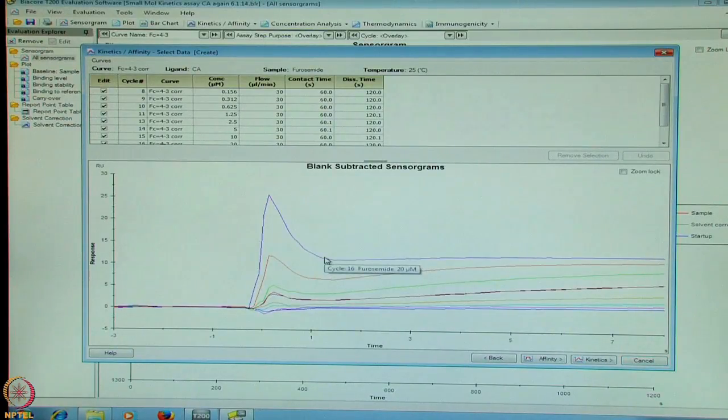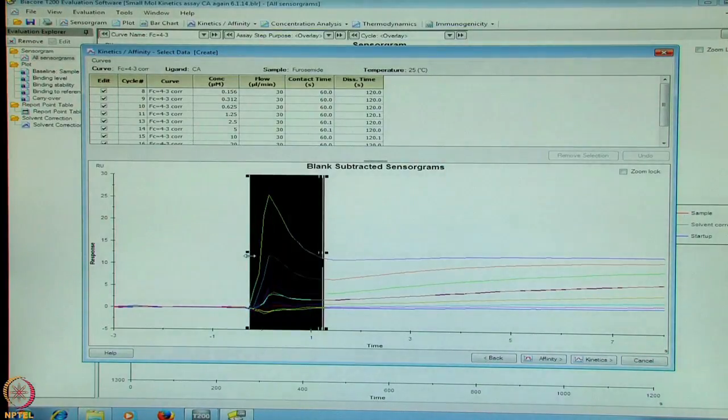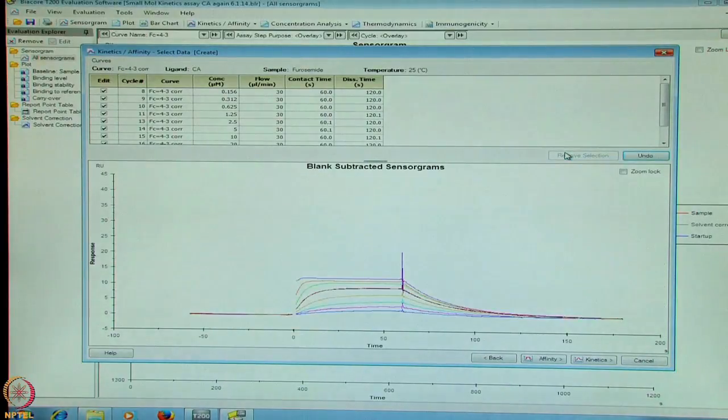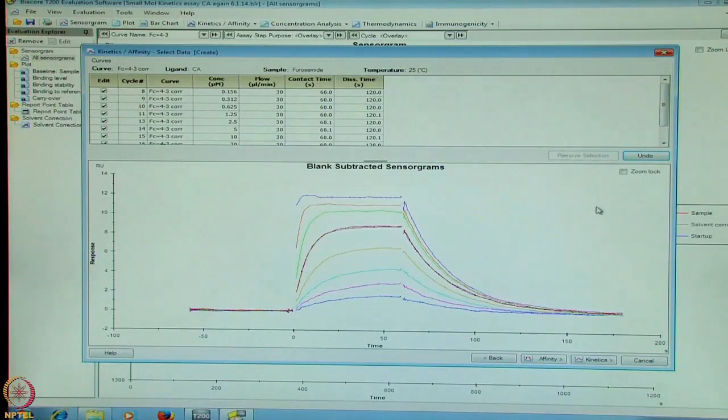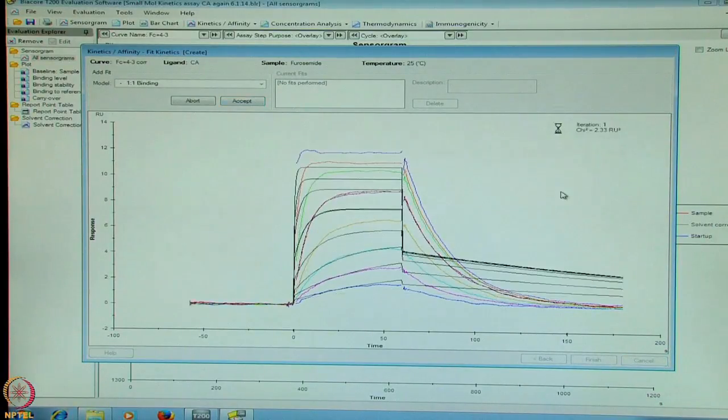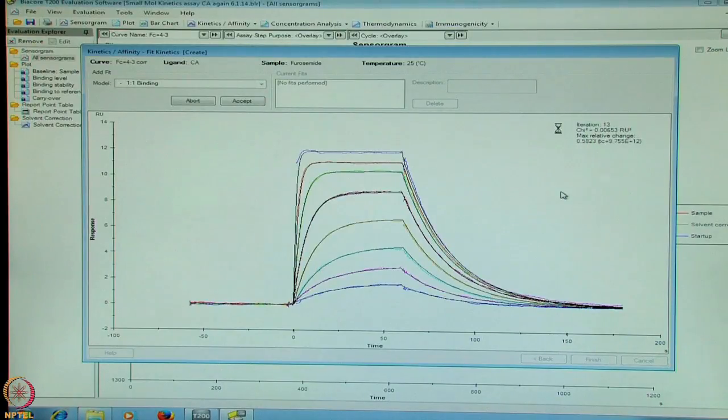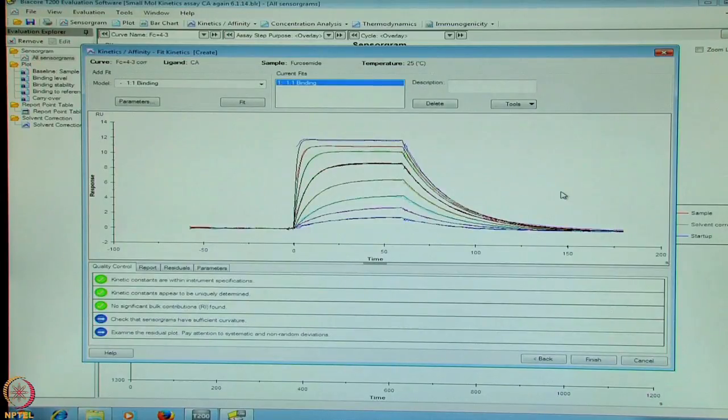We say next and we can clearly see the data having some spikes. So using the mouse button, we can highlight that range, subtract or remove the selected areas. Similarly, we can do that here as well. Once the subtraction is done, we can go further to evaluate in the kinetic mode and fit the data. So here on the quality control tab, you see all of them green and there is no significant bulk contribution found. And data is uniquely determined. And the data points are the kinetic on and off rates are within the range of the machine.